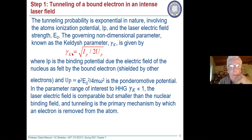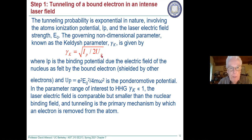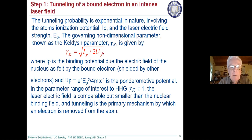I have a bit of a hard time with this formula. What does it mean that tunneling is best when gamma_K is much less than one, meaning this ratio is much less than one? I'm going to rewrite this formula in a moment to make it a little bit more sense.